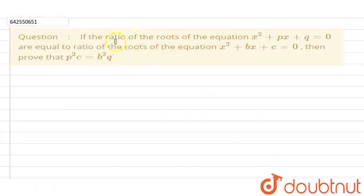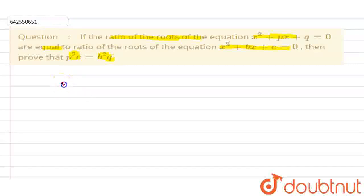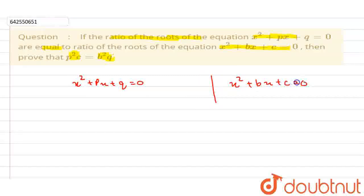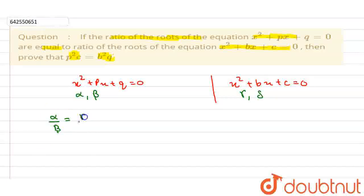Hello students. In this question we have given that if the ratio of the roots of this equation is equal to the ratio of the roots of a second equation. We need to prove that P squared C is equal to B squared Q. We have given a quadratic equation x² + Px + Q = 0, and also a quadratic equation x² + Bx + C = 0. Let's suppose alpha and beta are the roots of the first equation and gamma and delta are the roots of the second equation. The condition is that alpha by beta equals gamma by delta.